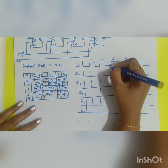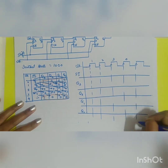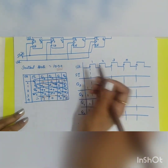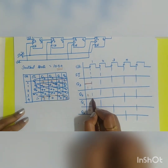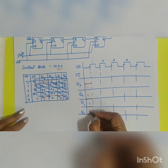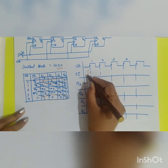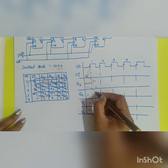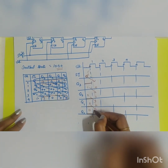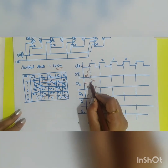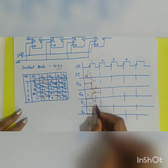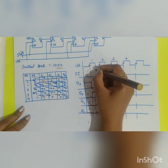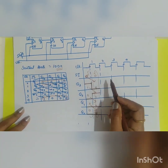The initial state of the register is 1 0 0 0, so Q3 starts at 1, Q2 at 0, Q1 at 0, Q0 at 0. The 0 from Q0 is fed back as the serial input. During the first rising edge: 0 shifts into Q3 — it changes to 0; 1 shifts into Q2 — it changes to 1; Q1 remains 0; Q0 remains 0. The serial input now becomes 0 again.